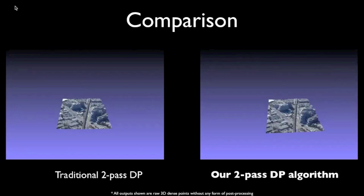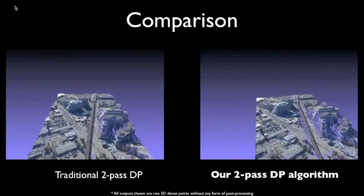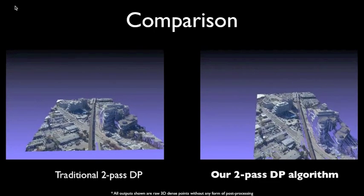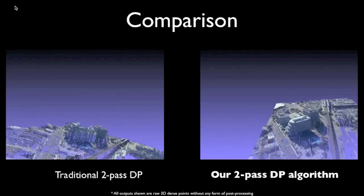On the left, a traditional 2-pass dynamic programming operates along and across rectified epipolar directions, which in this case fails to capture the full structural constraint of the building geometry, leading to distorted building facades.